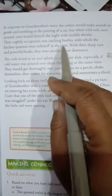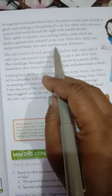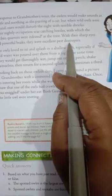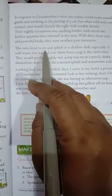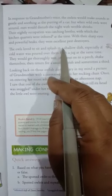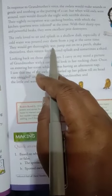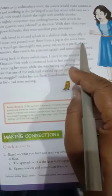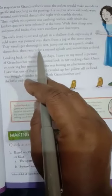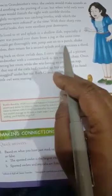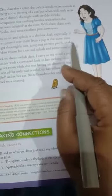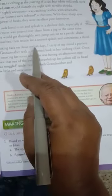At the time, with their sharp eyes and powerful beaks, they were excellent pest destroyers. The owls loved to sit and splash in a shallow dish, especially if cold water was poured over them from a jug. At the same time, they would get thoroughly wet, jumped out on the perch shake themselves, then return for a second splash and sometimes a third also.